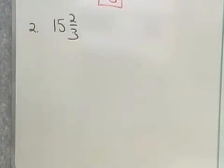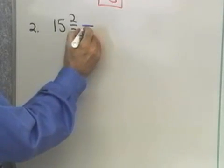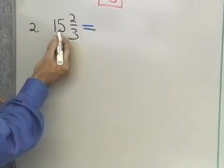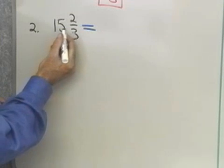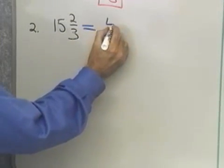Let's try that with another one. Here, I have 15 and 2/3. I want to change to an improper fraction. So, what I'm going to do is multiply 3 times 15, I get 45, I add 2 to that, I get 47.